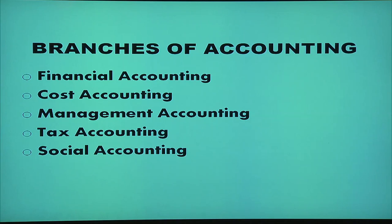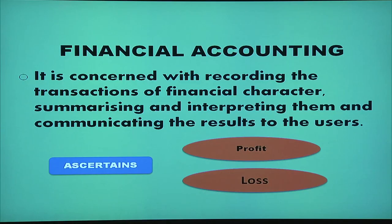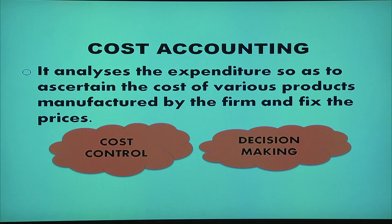We have branches of accounting like financial accounting, cost accounting, management accounting, tax accounting, and social accounting. Financial accounting is concerned with recording transactions of a financial character, summarizing and interpreting them, and communicating the result to the users — we ascertain the profit or loss of the business. Cost accounting analyzes the expenditure to ascertain the cost of various products manufactured by the firm and fix the prices, and helps in cost control and decision making.